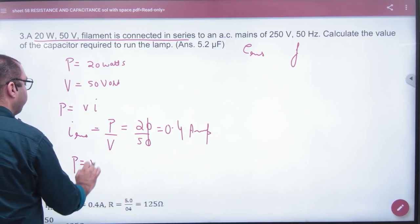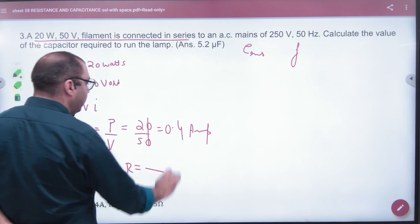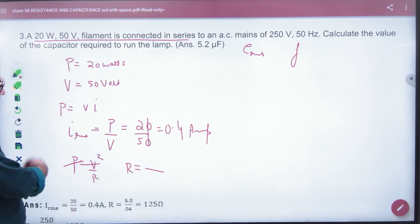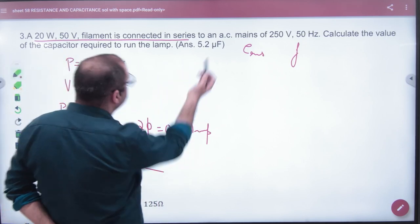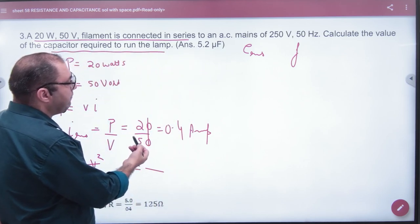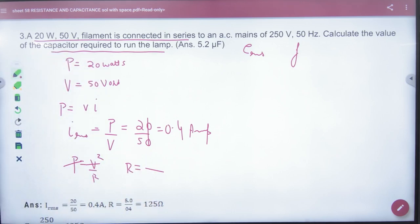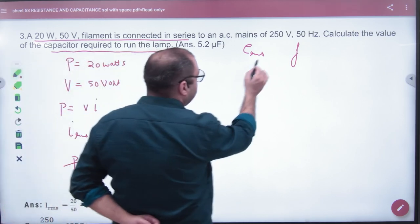And from here, P is equal to V square by R. P knows, V knows, which value will be R? So RMS comes, R comes, E RMS comes, frequency comes. What is the capacitor required to run the lamp? So capacitance value C you will have to know. Now the question is R and C combination - R and C are in series.